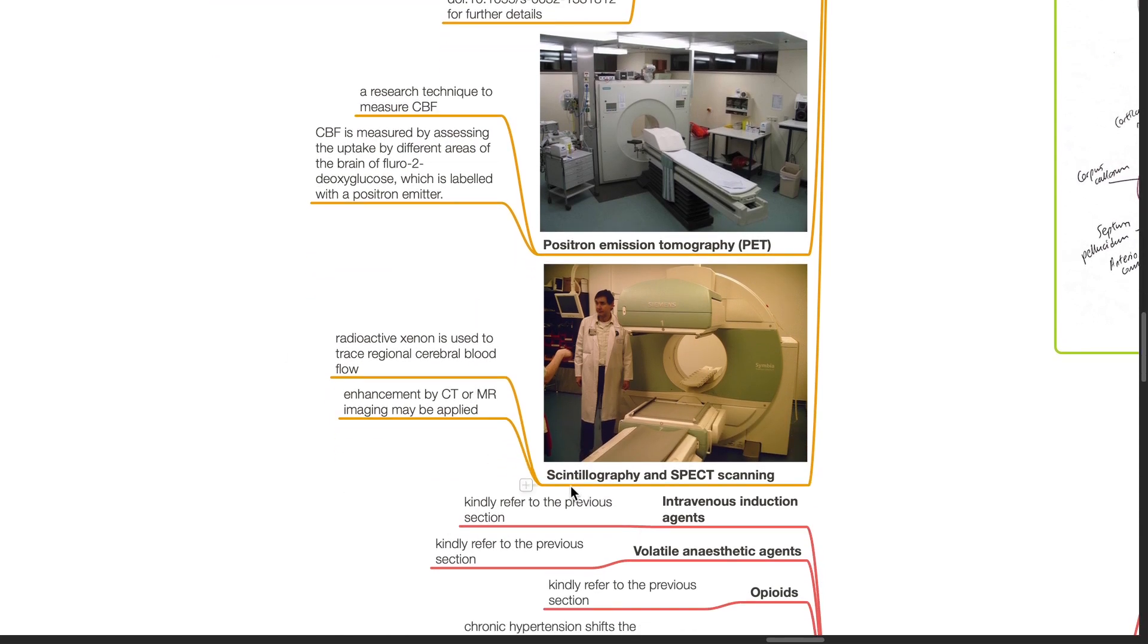Scintigraphy and SPECT scanning. Radioactive xenon is used to trace regional cerebral blood flow. Enhancement by CT or MRI may be applied.